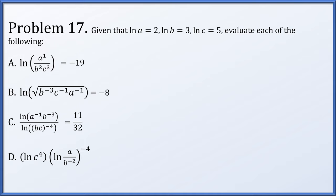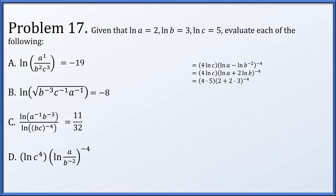Part d: ln of c to the 4th times the natural log of (a divided by b to the minus 2) all raised to the minus 4 power. The power of 4 on c is brought out as a scalar multiple. The log of a over b to the minus 2 becomes ln a minus ln b to the minus 2, and the minus 2 exponent comes out. With ln c = 5, ln a = 2, ln b = 3 substituted in, the parenthetical term 2 plus 2 times 3 equals 8, raised to the minus 4. We get 20 divided by 4096, which simplifies to 5 over 1024.